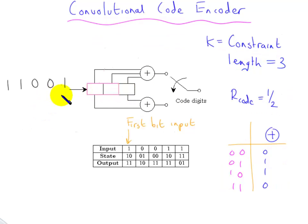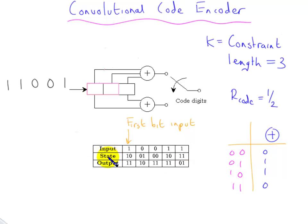The input sequence I'm going to look at is one, zero, zero, one, one, which is also shown in this table, where this is the first input bit, then this, then this, and so forth. Ignore for now what is meant by the state — we will come back to that. What is shown in the table is the output two digits for the particular input, and remember that it's all interrelated.